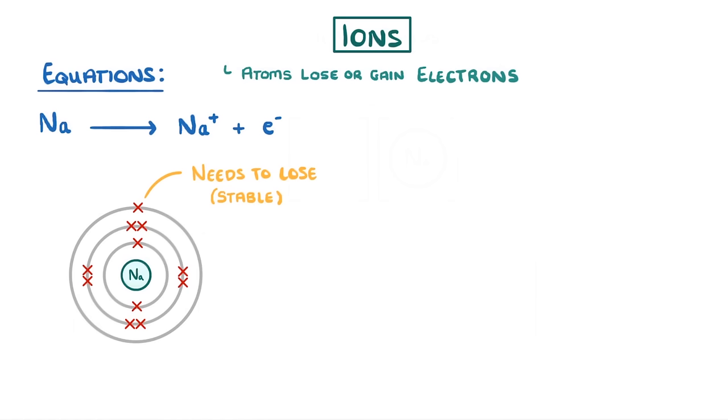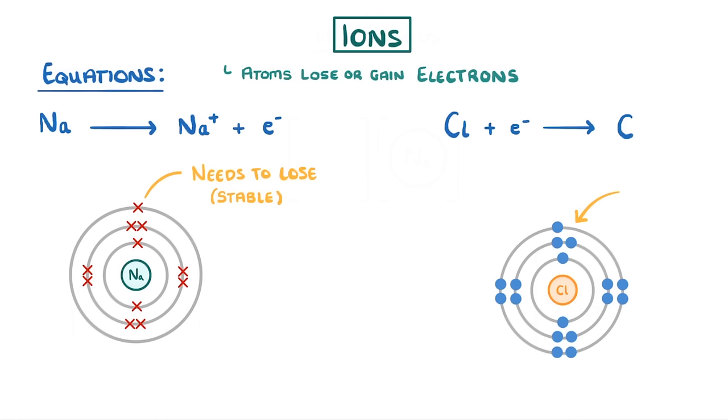Meanwhile for chlorine we'd write that chlorine plus an electron which we can see it needs to complete its outer shell goes to form a one minus chloride ion.